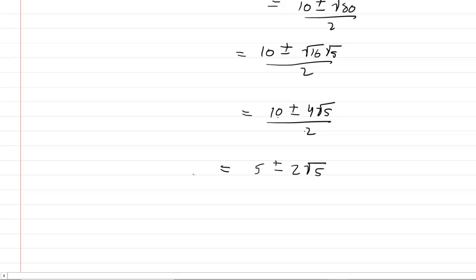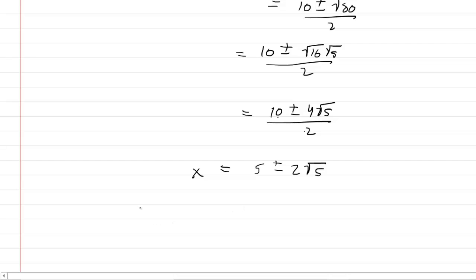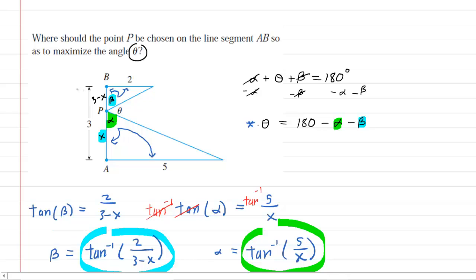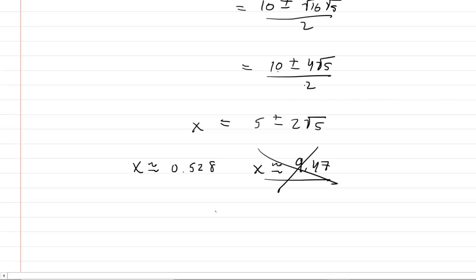These are the two solutions for x. Plugging into a calculator, 5 plus 2 radical 5 is approximately 9.47, and 5 minus 2 radical 5 is approximately 0.528. But recall the entire segment AB has a length of only 3, so x cannot be larger than 3. Therefore we reject x equals 9.47 and keep x equals 5 minus 2 radical 5.